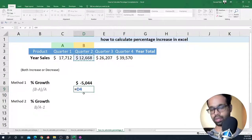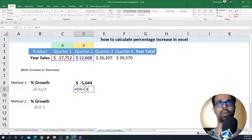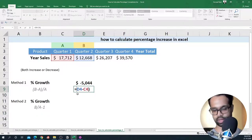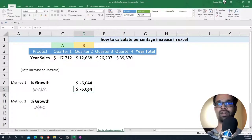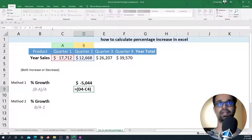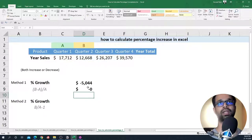It's going to be quarter two minus quarter one and I have to enclose this within the round bracket. That will give us the difference and then I divide it by the quarter one to get the percentage increase or decrease.